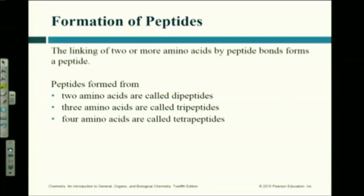How does your body know which sequence to put the amino acids in? Ribosomes. Ribosomes are responsible for making proteins in your cells, and they contain ribosomal nucleic acid — RNA. That RNA determines the sequence in which the amino acids are bonded together, telling the ribosome what order to put them in.